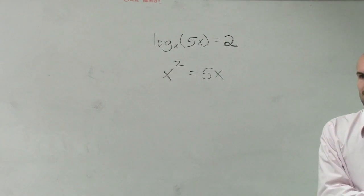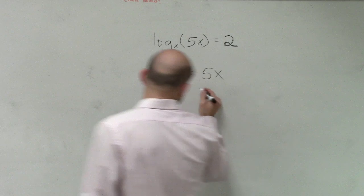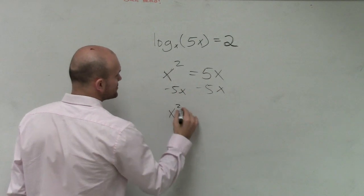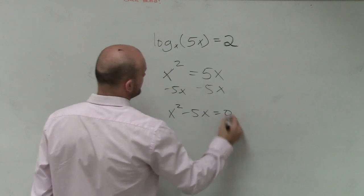Yes? Zero. Zero. Very good. So I'll subtract 5x on both sides, and then I have x squared minus 5x equals 0.